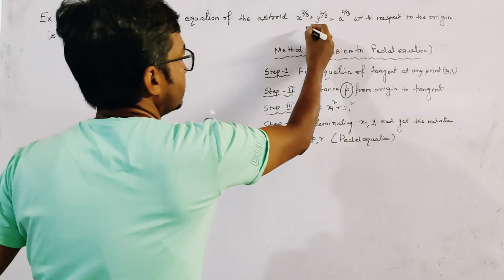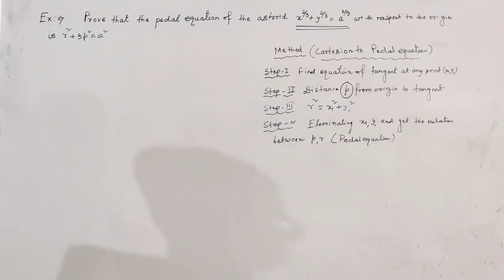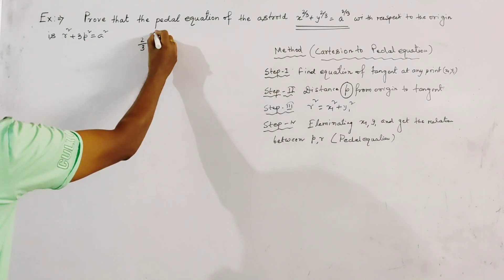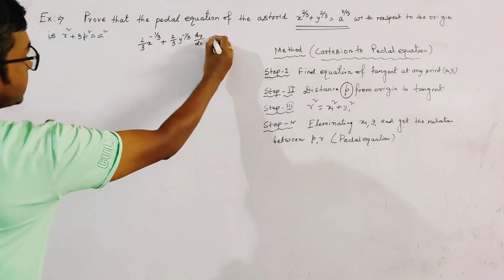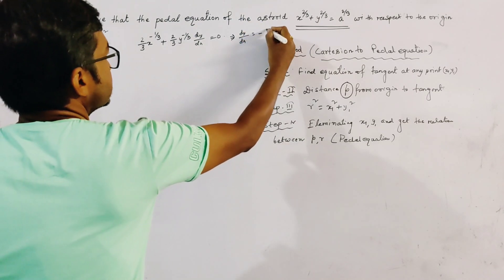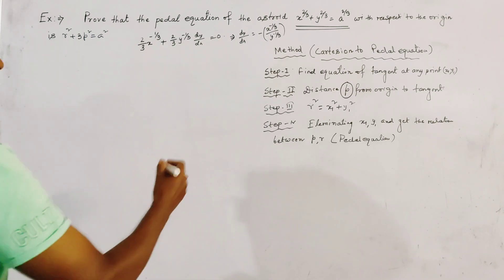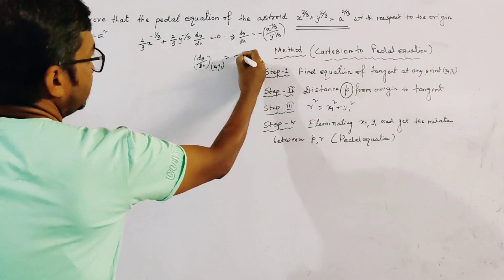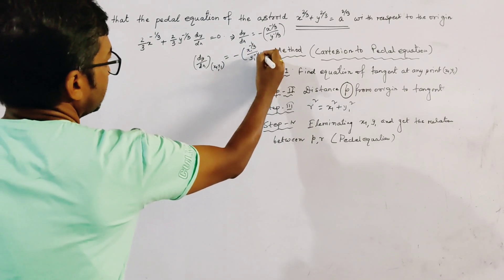We first find the equation of the tangent at any point (x1, y1) to the asteroid. Differentiating: (2/3)x^(-1/3) + (2/3)y^(-1/3) · dy/dx = 0, so dy/dx = -x^(-1/3) / y^(-1/3). At the point (x1, y1), dy/dx = -x1^(-1/3) / y1^(-1/3).